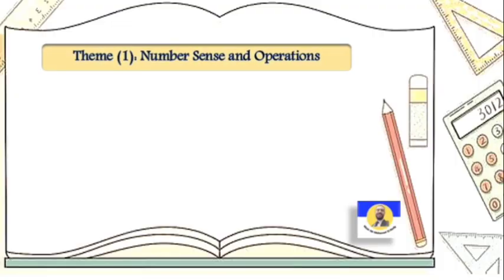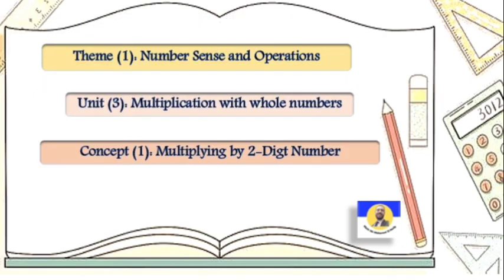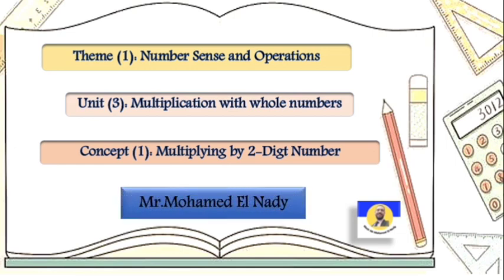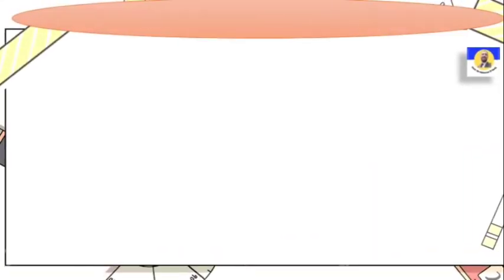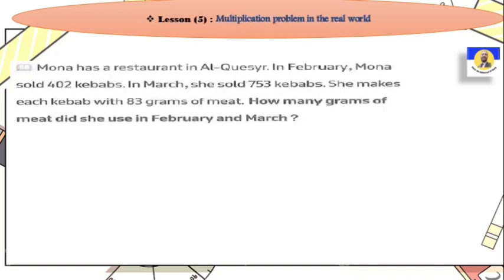Assalamu alaikum wa rahmatullahi wa barakatuh. Welcome, Primary Five students. Today inshallah we will complete Theme One: Number Sense and Operations, Unit Three: Multiplication with Whole Numbers, Concept One: Multiplying by Two-Digit Numbers. Lesson Five: Multiplication Problems in the Real World.